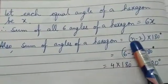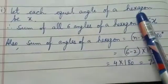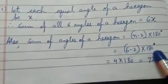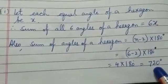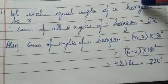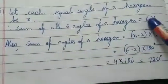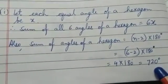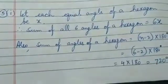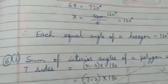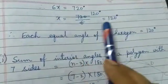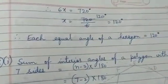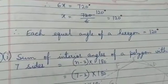Sum of angles of a hexagon = (n minus 2) into 180 degrees, where n = 6 because it is a hexagon with 6 sides. So 6 minus 2 into 180 degrees = 720 degrees. We now have two values for the sum of angles: 6x and 720. We equate and simplify: 6x = 720 degrees, so x = 120 degrees. Therefore, each equal angle of a hexagon is 120 degrees.